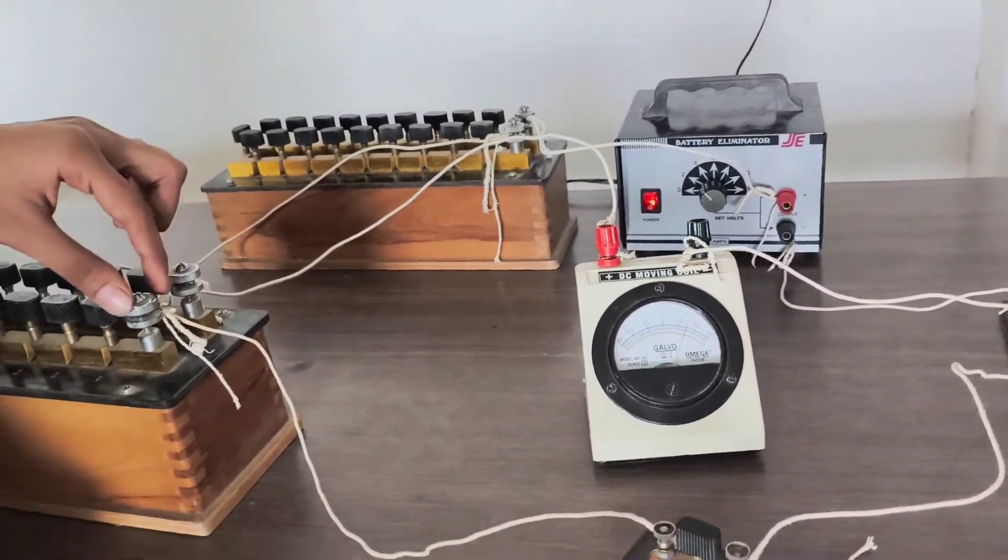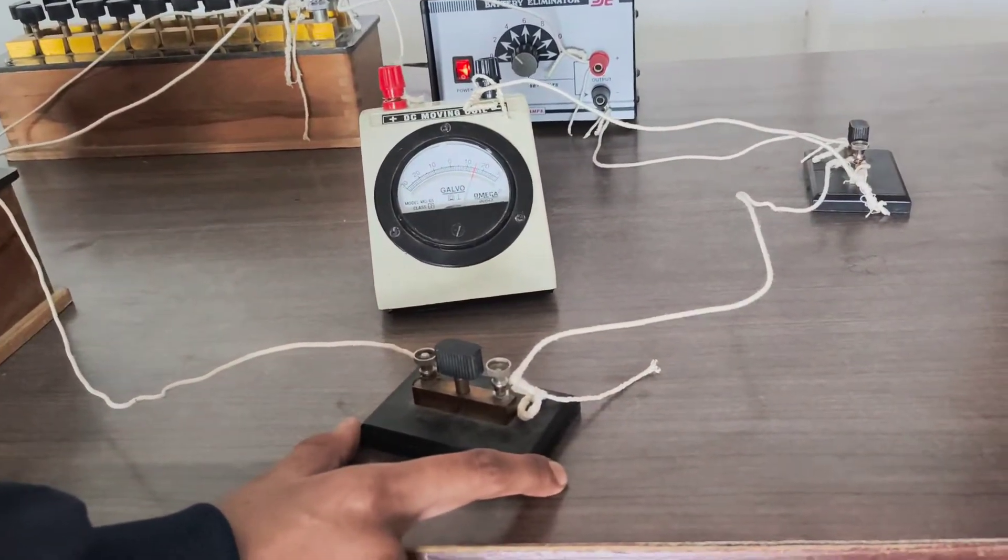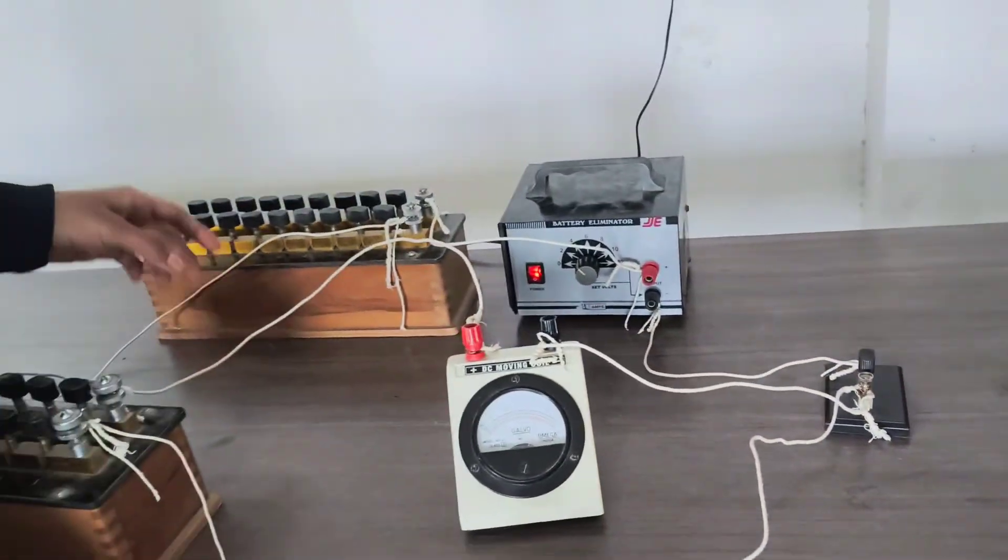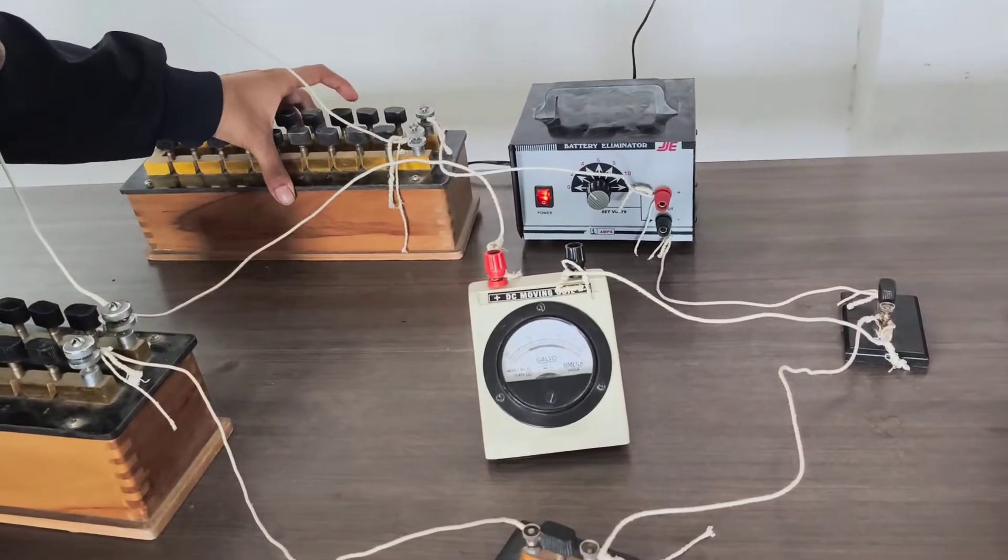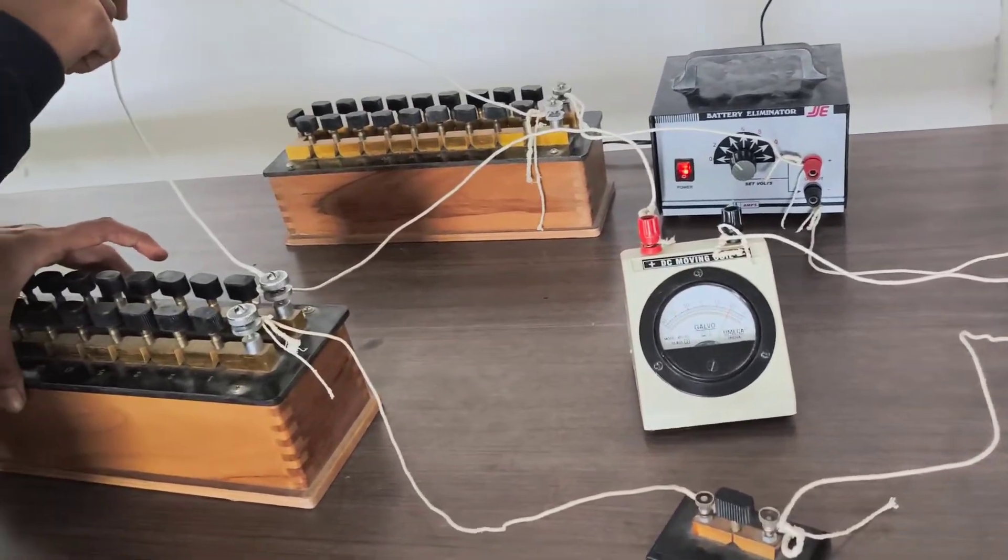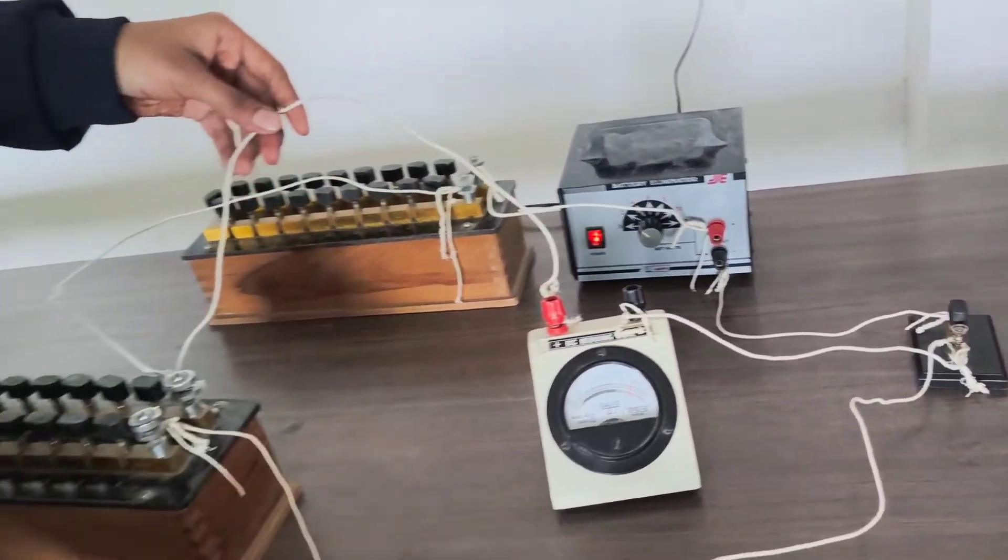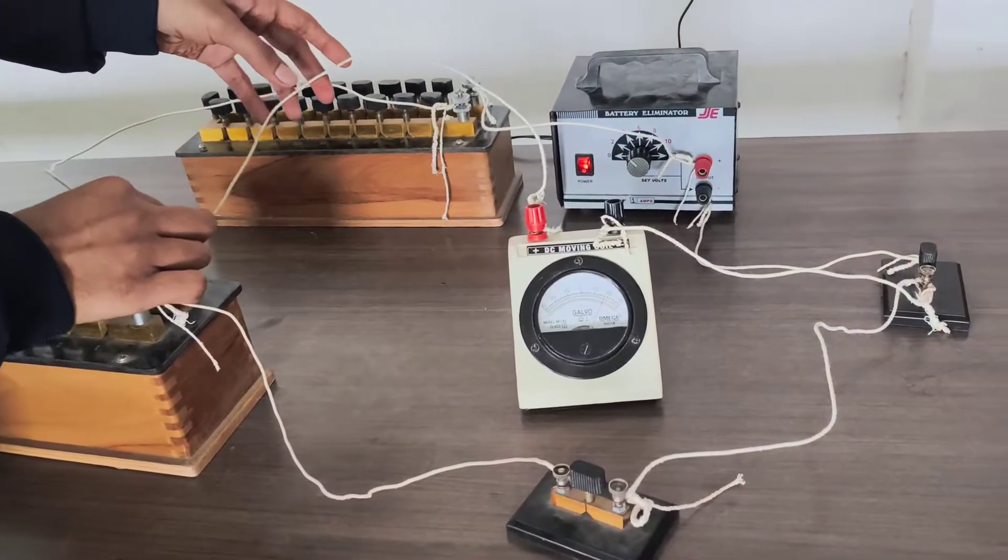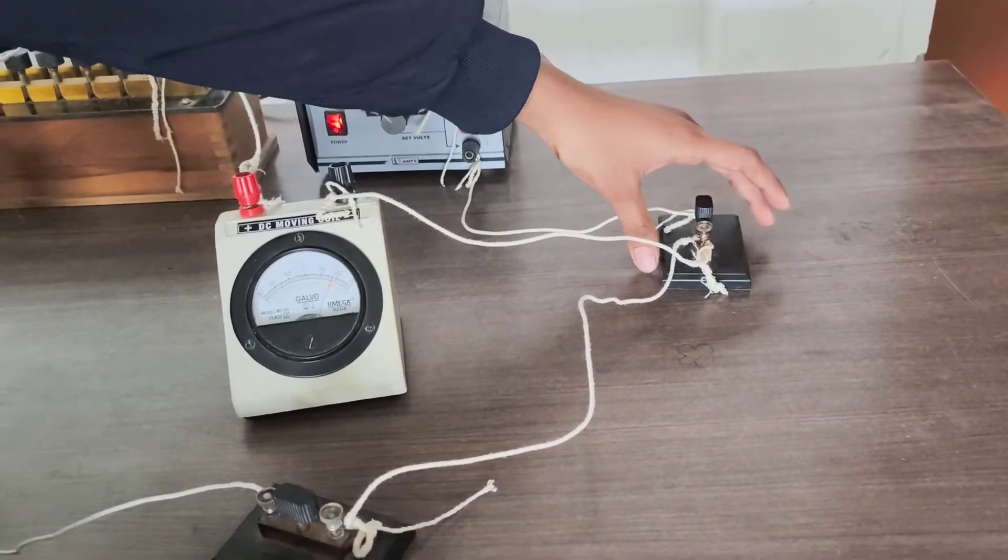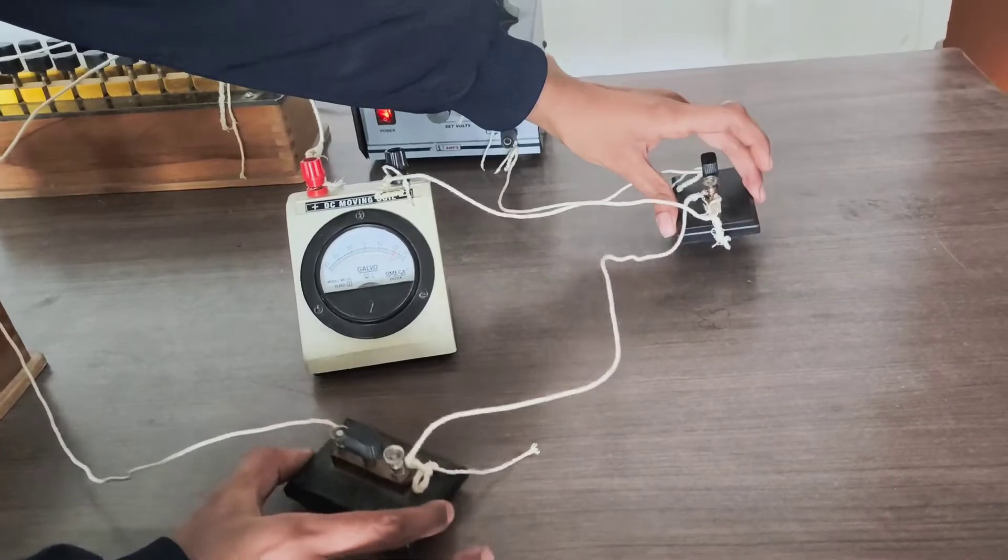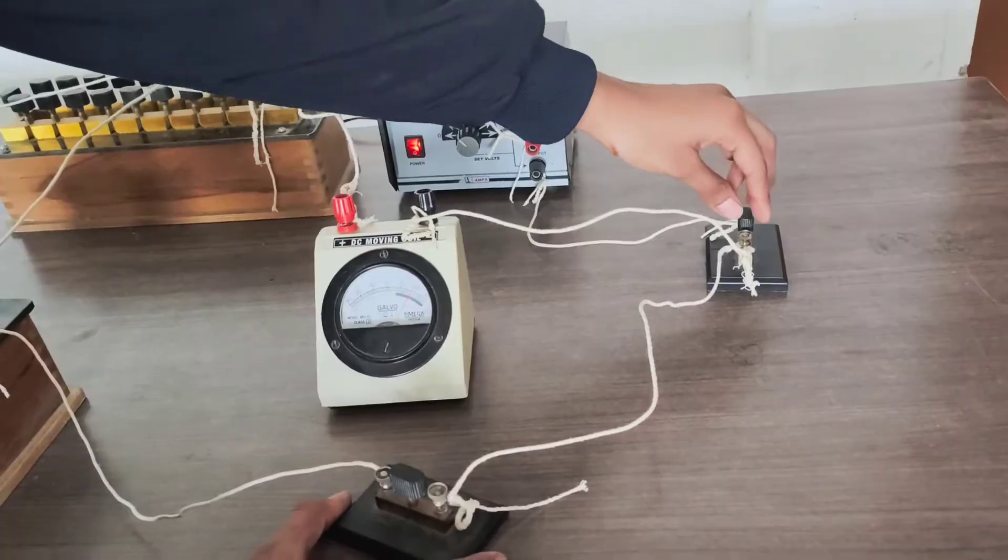And the other terminal of the shunt resistance is connected to key 2, and this key 2 is directly connected to key 1. Here you can see the connection through which this larger resistance box and this smaller resistance box is connected. We also have to connect this galvanometer with any of these terminals, and also in the connection of these keys, the galvanometer is also connected with one of these terminals.